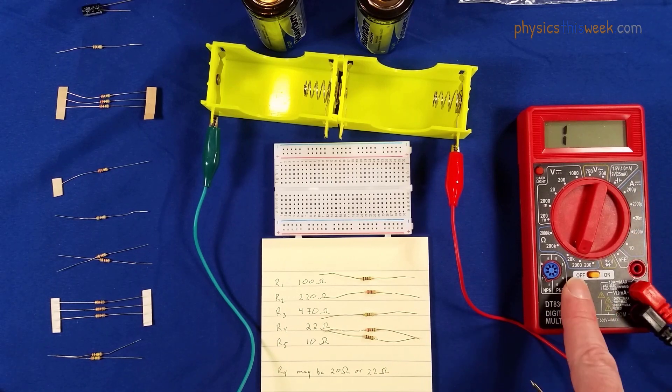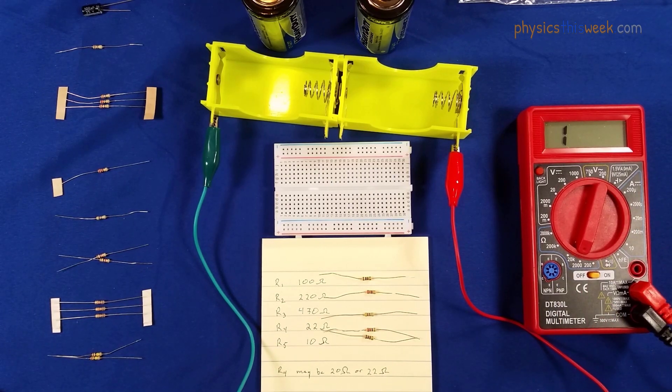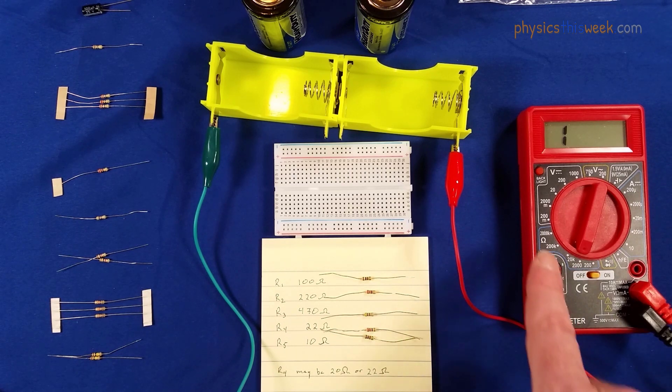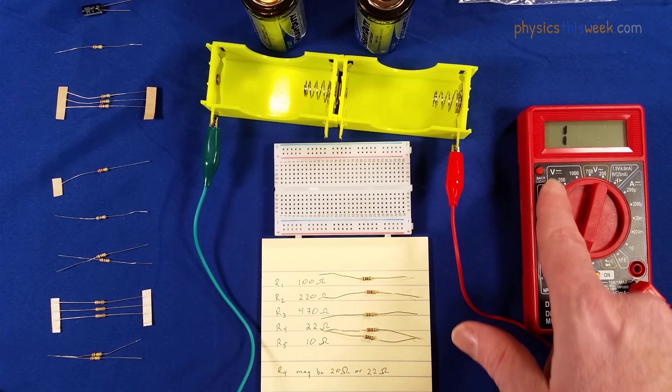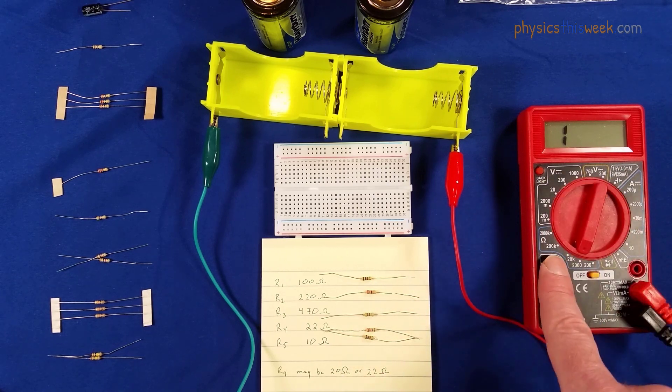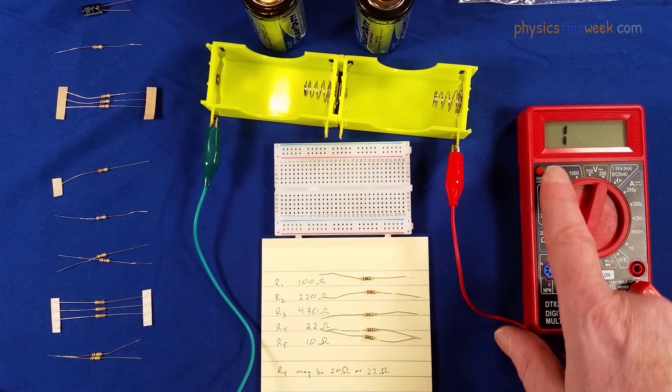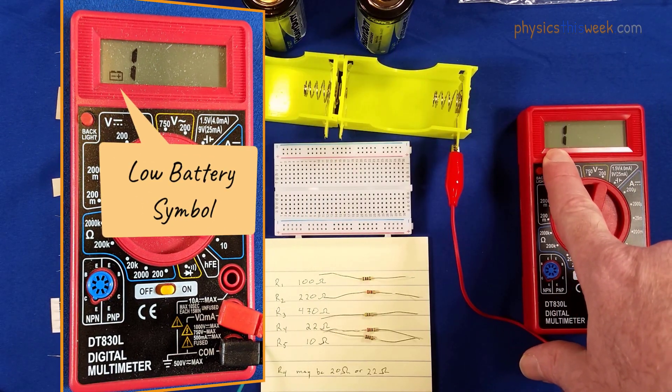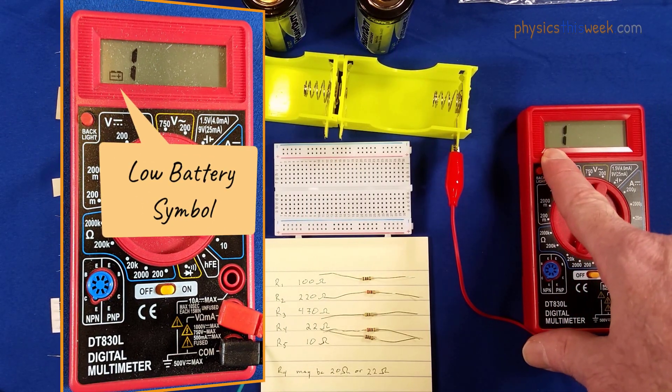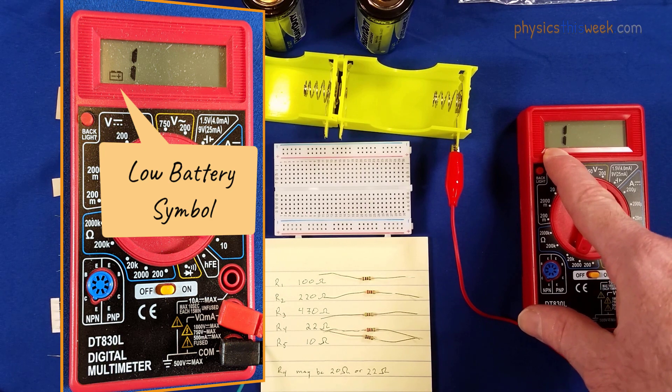Okay, so I've got it set on the right area. One of the biggest mistakes that people make with this lab and with working in electronics in general is that you forget to move the dial to the right spot. The other thing you want to watch out for is if there's a little battery symbol here. Your battery is getting low and you're going to get all kinds of weird values for things.